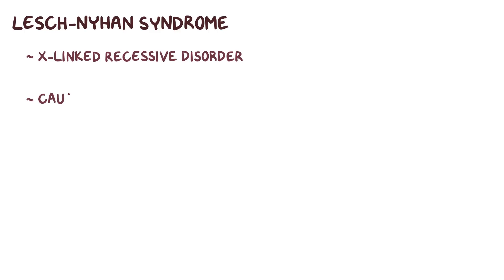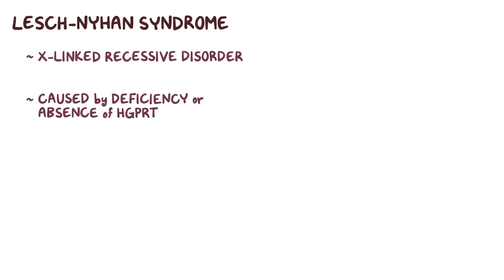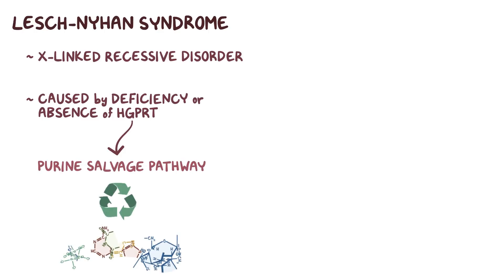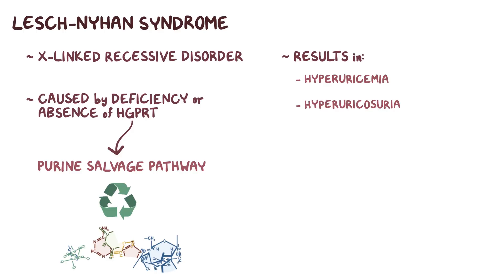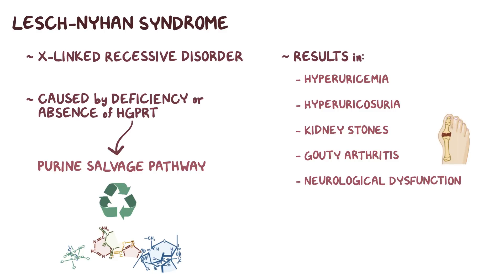As a quick recap: Lesch-Nyhan syndrome is an X-linked recessive disorder caused by a deficiency or absence of the enzyme hypoxanthine guanine phosphoribosyl transferase, or HGPRT for short, which takes part in the purine salvage pathway. The result is hyperuricemia and hyperuricosuria, which leads to kidney stones, gouty arthritis, and neurological dysfunction, like movement disorders and behavioral disturbances, including self-injury.